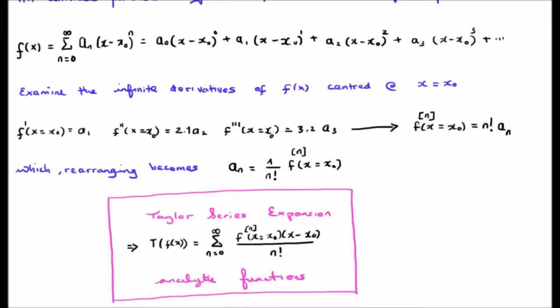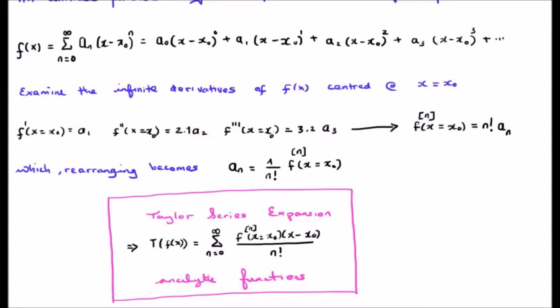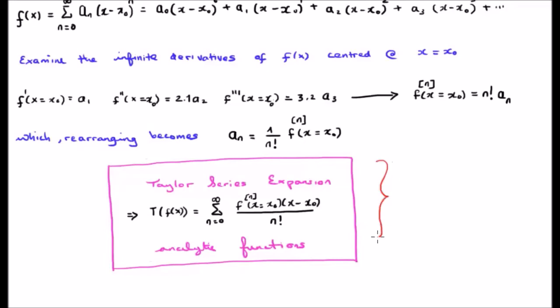Similarly if we take the second derivative we are left with a_2 multiplied by a coefficient, and all other expressions in the power series will have an (x minus x_0) term which goes to zero. If we take the first derivative we get the second coefficient, the second derivative gives the third coefficient, and so on. It seems that if we take the nth derivative of our function and evaluate it at x equals x_0, it equals n factorial multiplied by the coefficient a_n. We may rearrange this to calculate a_n as 1 over n factorial times the nth derivative evaluated at x_0. This allows us to rewrite the power series as the Taylor series expansion.